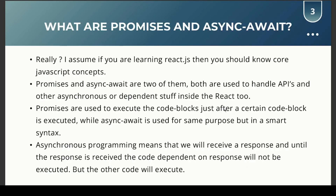Assuming you are learning React.js, you should know core JavaScript concepts. Promises and async/await are two of them. Both are used to handle APIs and other asynchronous or dependent operations. Promises execute code blocks sequentially — the next block only runs after the previous one completes. Async/await is a simpler syntax for the same purpose. Asynchronous programming means code dependent on a response won't execute until the response is received, but other code can run in the meantime.